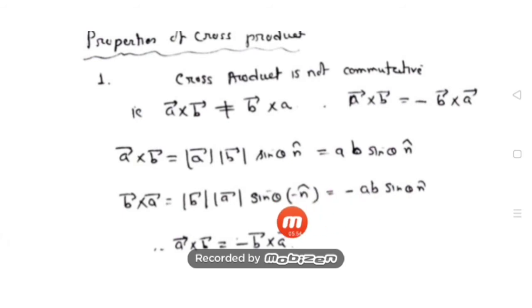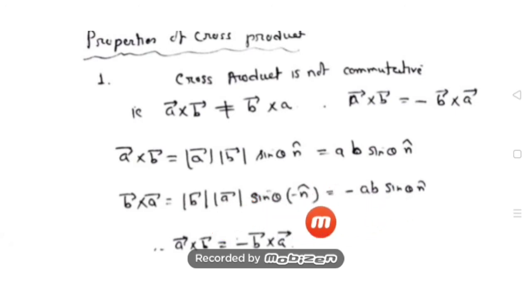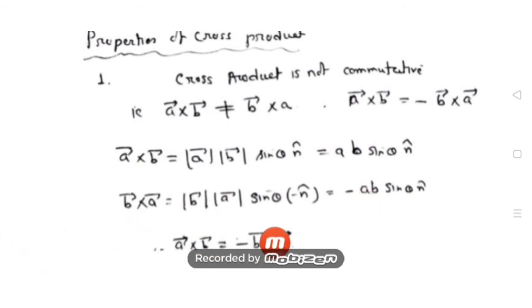Proof: By definition, a-bar cross b-bar = ab sine theta n-cap. For b-bar cross a-bar = ba sine theta (−n-cap), because the direction reverses. Since b·a = a·b (numbers are commutative), this equals −ab sine theta n-cap = −(a-bar cross b-bar). Therefore a-bar cross b-bar = −(b-bar cross a-bar). Unlike dot product where a·b = b·a, for cross product a×b ≠ b×a but equals −(b×a).